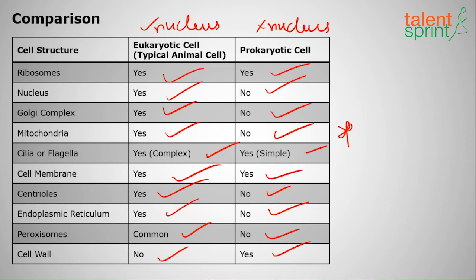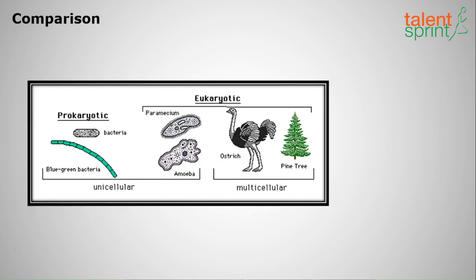Unicellular organisms — like blue-green bacteria and amoeba — are generally prokaryotic, while eukaryotic cells are found in multicellular organisms, though eukaryotes can also include some single-celled organisms. That is all for this session on cell structure. We shall meet in the next session. Thank you so much.